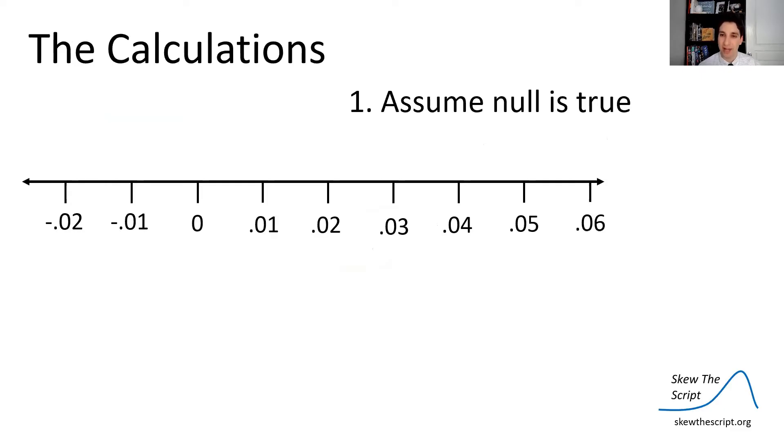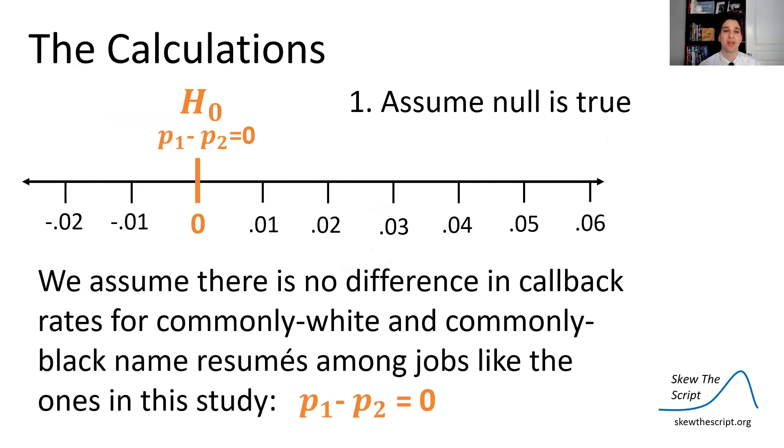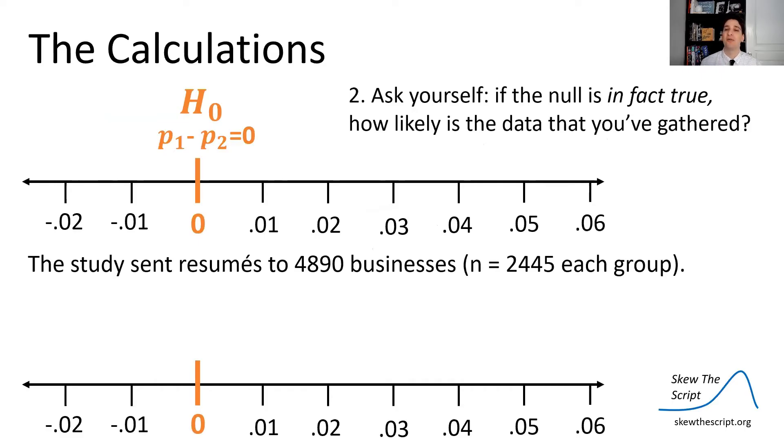So let's go through that. Let's assume the null is true. So we assume that there's no difference in callback rates among the group because there's no discrimination. So P1 minus P2 is zero. So now let's start thinking about how unusual the data we got was from the study under that assumption.